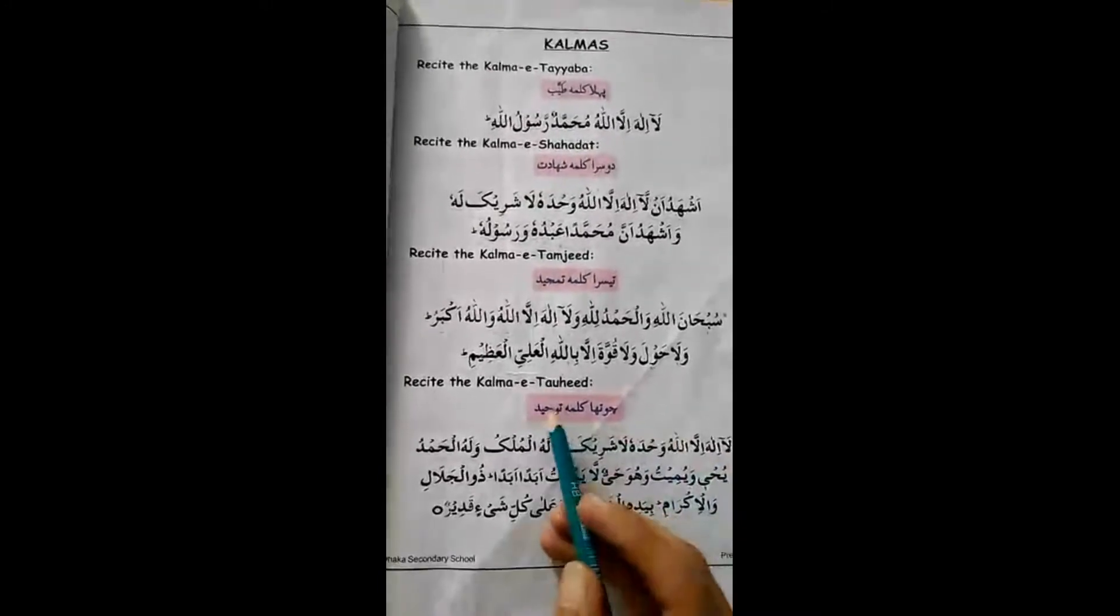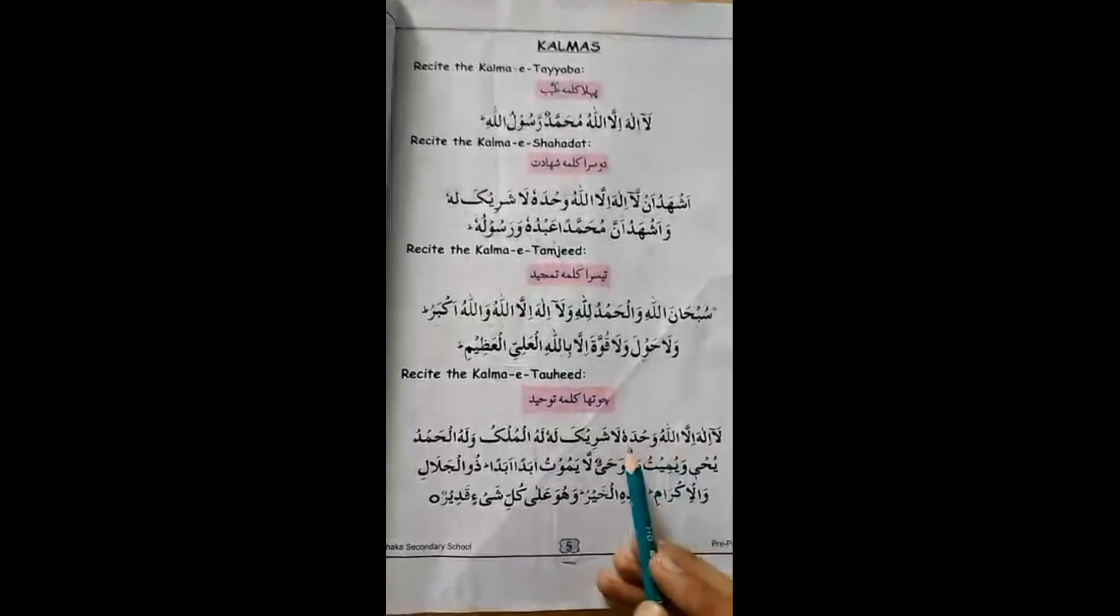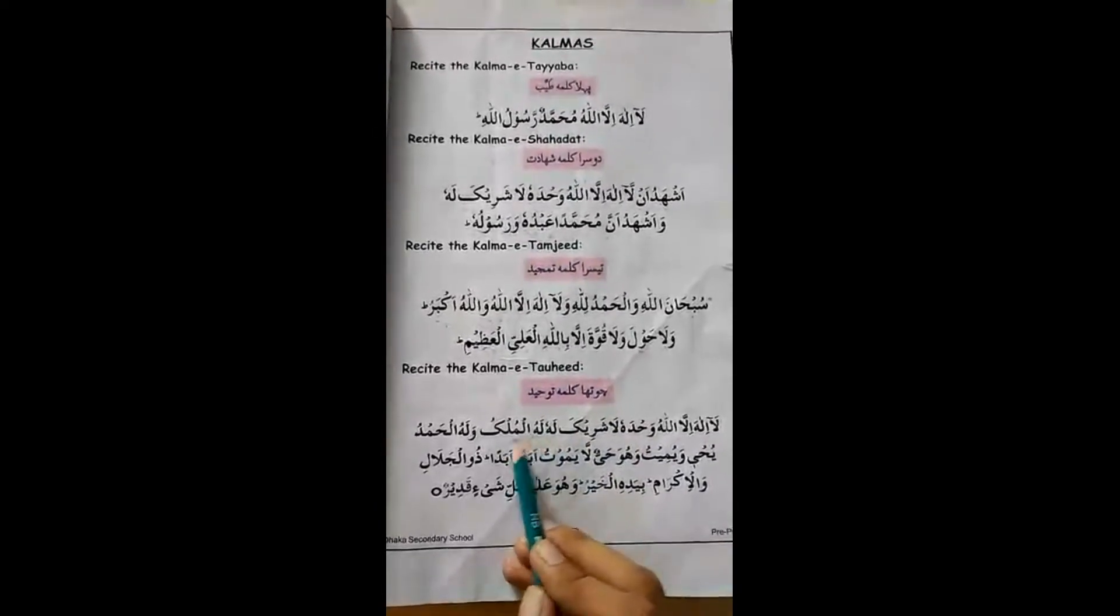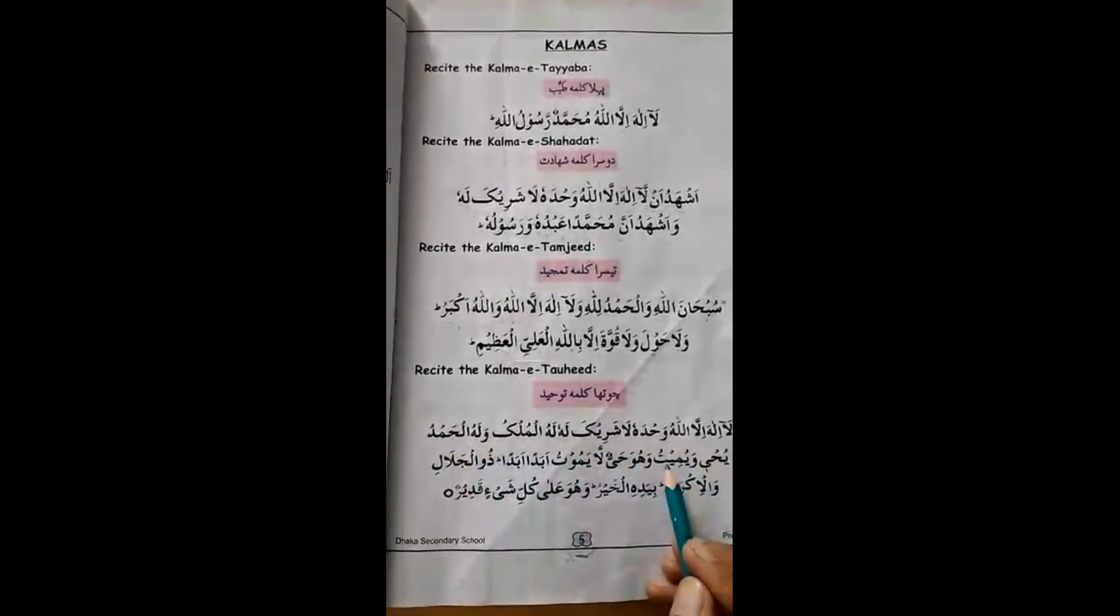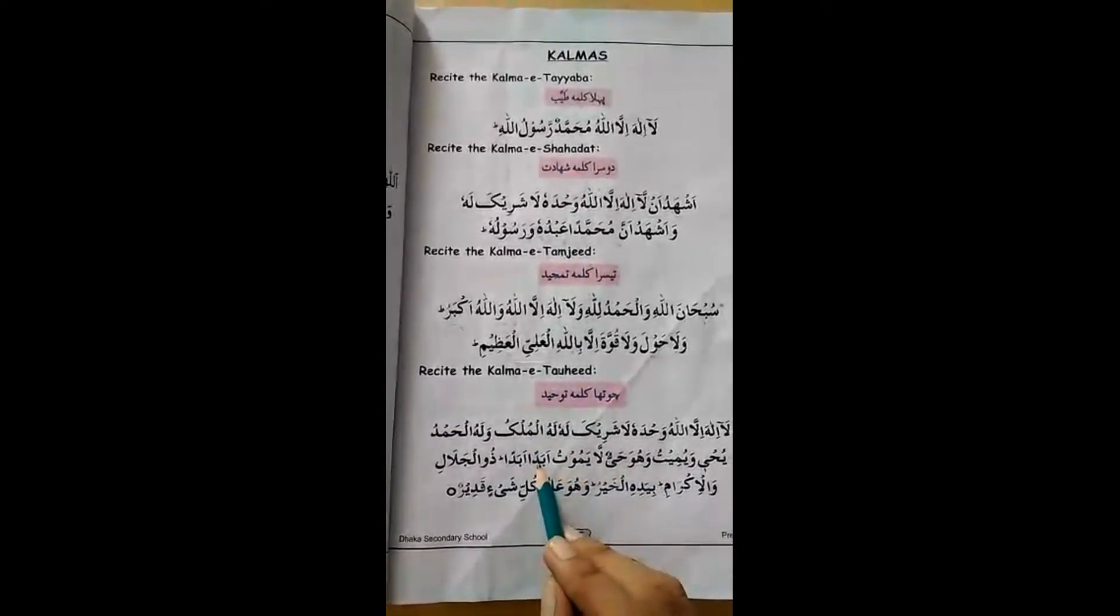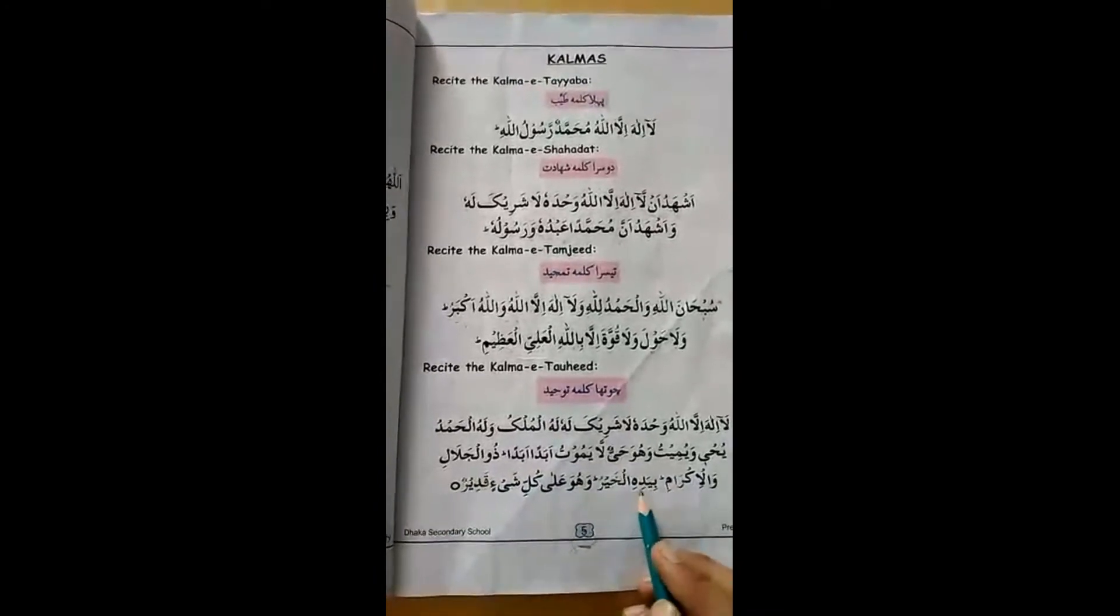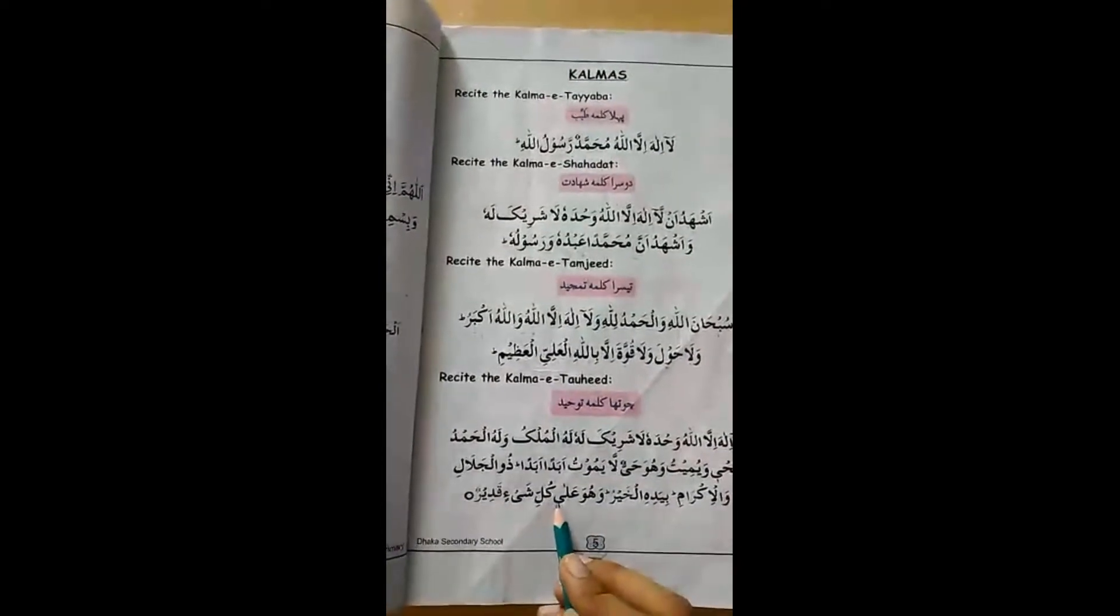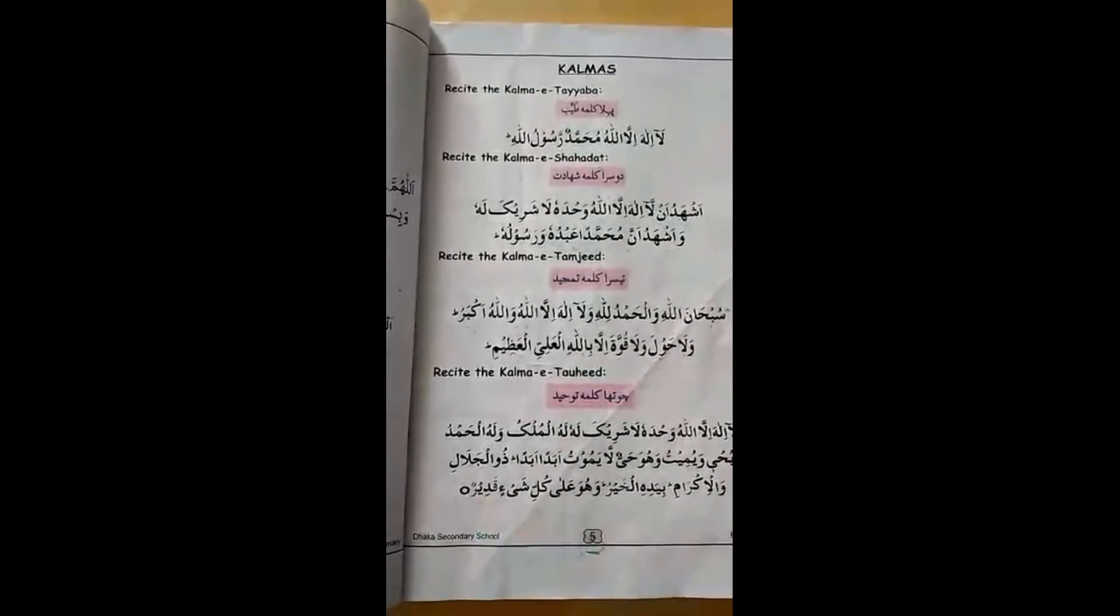چوتھا کلمہ توحید: لا الہ الا اللہ وحده لا شريک له له الملک ولہ الحمد يحی ویمیت وهو حی لا يموت ابدا ابدا ذو الجلال والاکرام بیده الخیر وَهُوَا قَلَقُ لِّ شَيْئِن قَدِير. آپ اسے daily revise کریں گے.